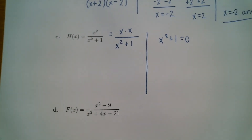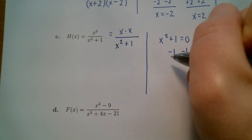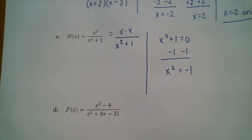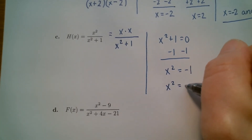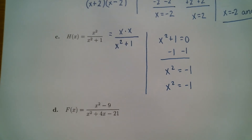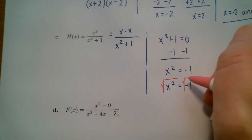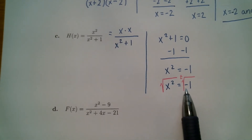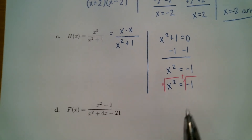We want to get x by itself, so we're going to move the one over. That gives us x squared equals negative one. If you have something squared equal to a number, you take the square root of both sides and put a plus or minus out front. You'll run into a problem — you've got a negative underneath the square root. The square root of negative one is i, so you've got an imaginary number here.